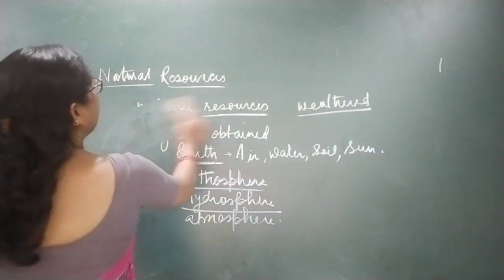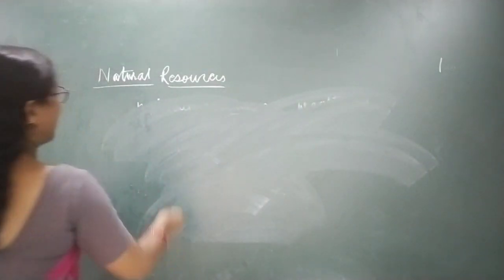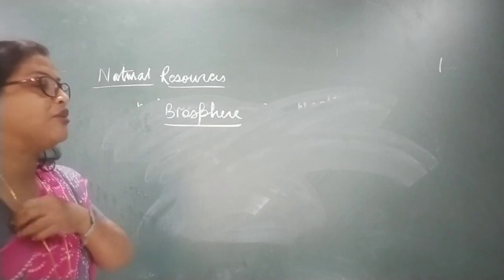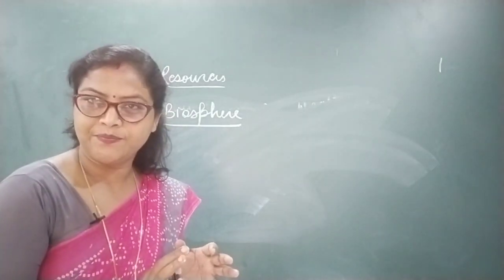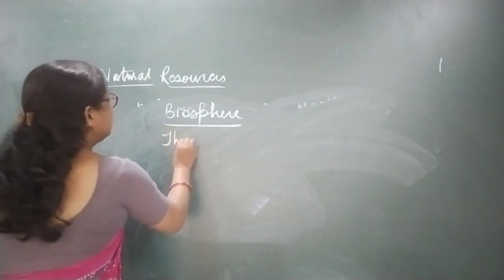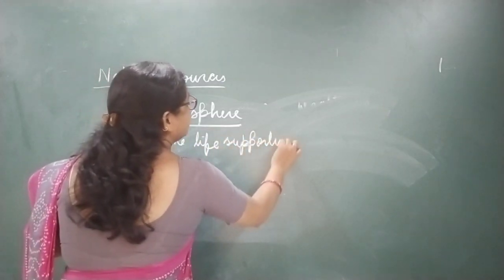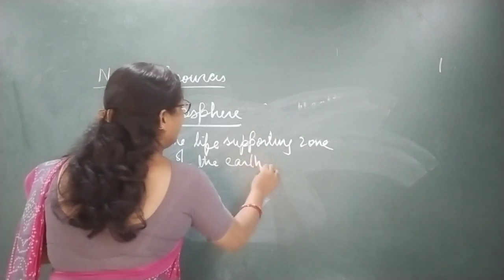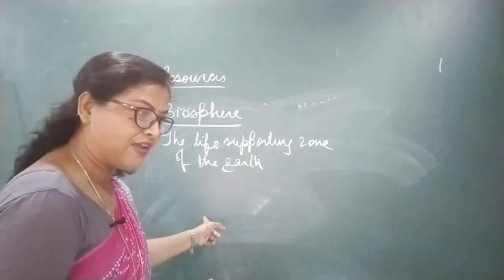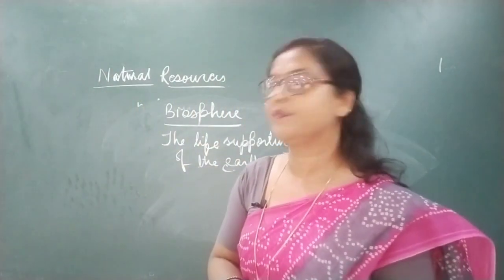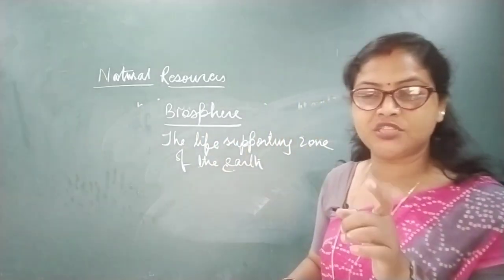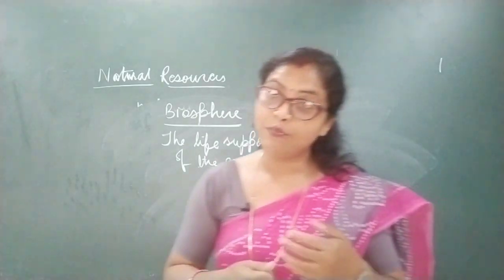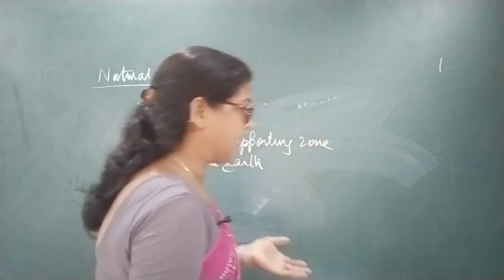Now, what do we mean by biosphere? Biosphere means the life-supporting zone of the earth. You can define biosphere as the life-supporting zone of the earth in which lithosphere, hydrosphere and atmosphere all interact with each other, and make life possible on this earth.